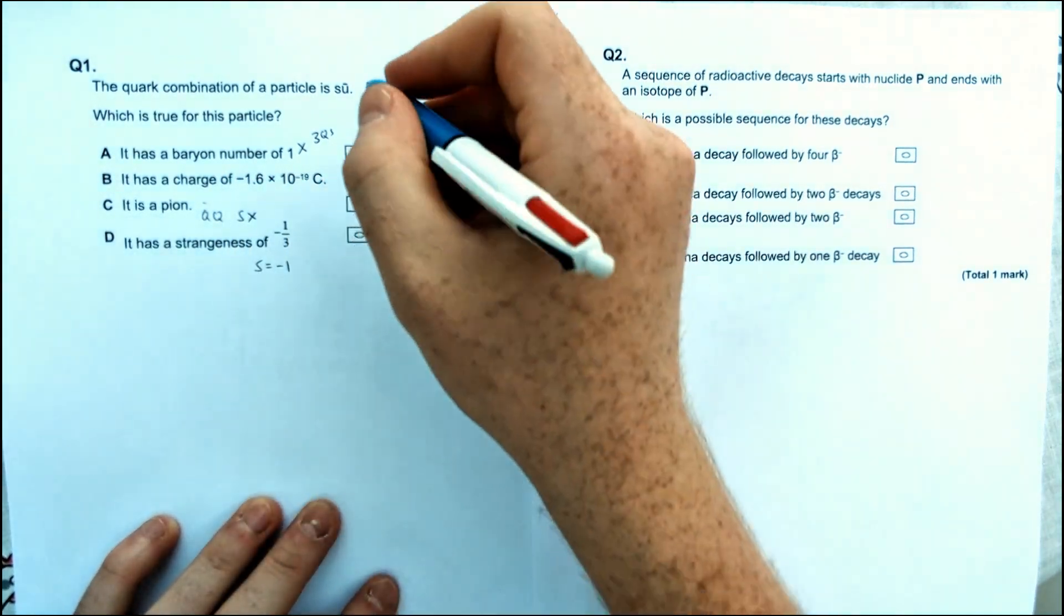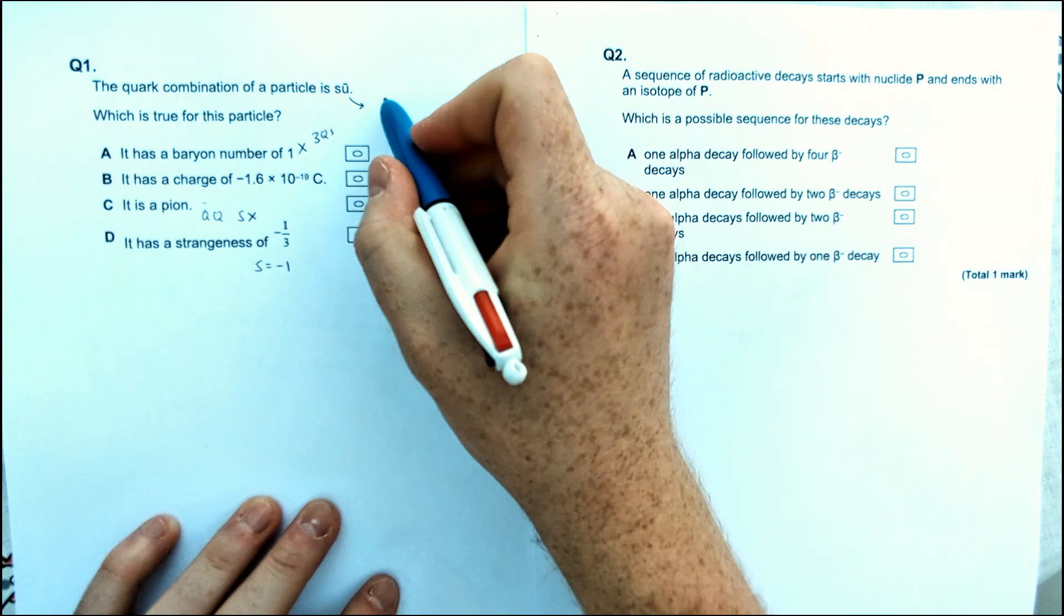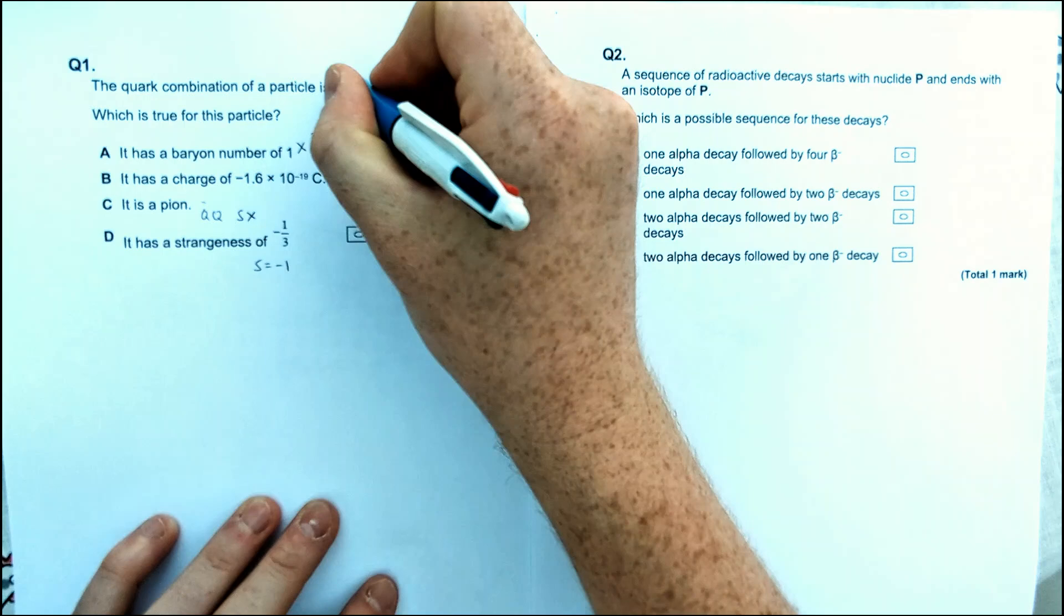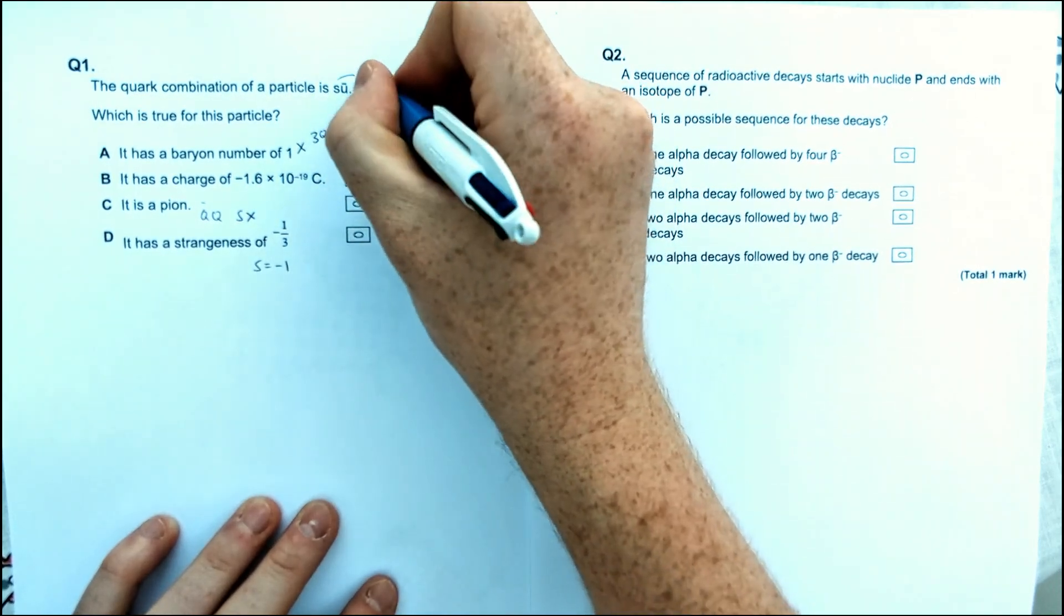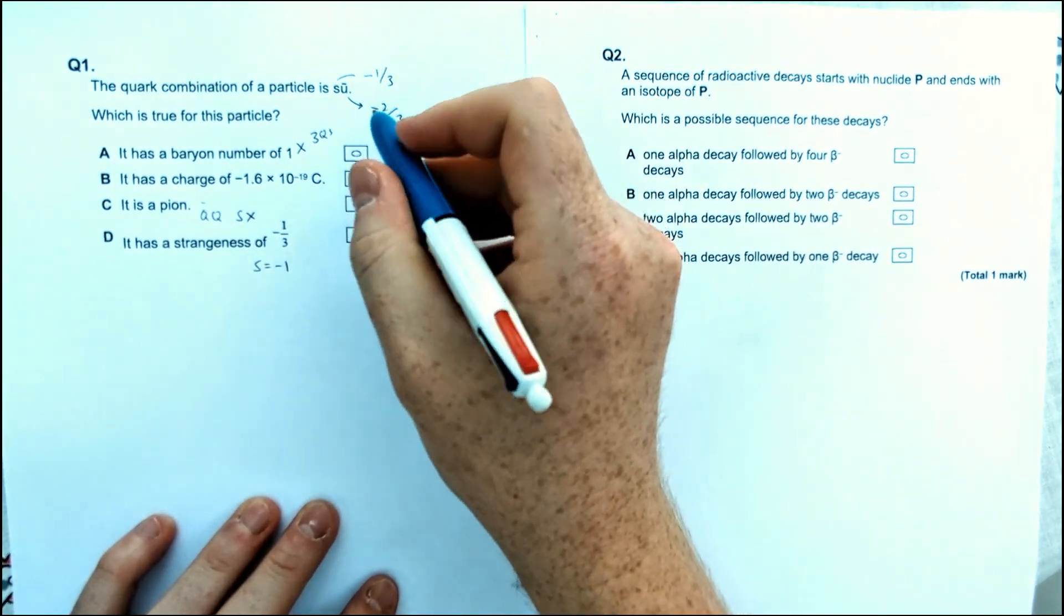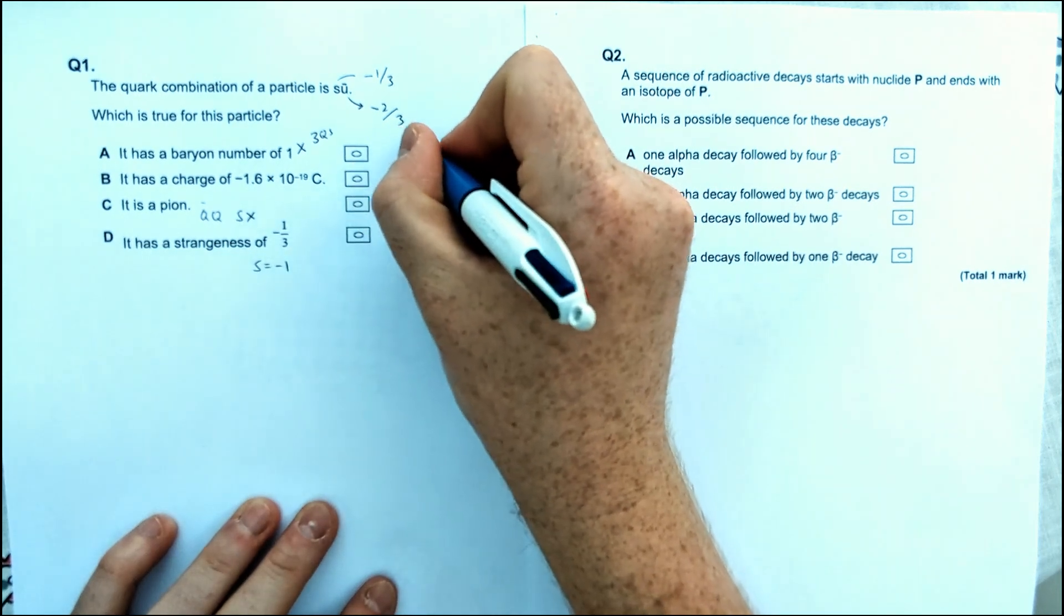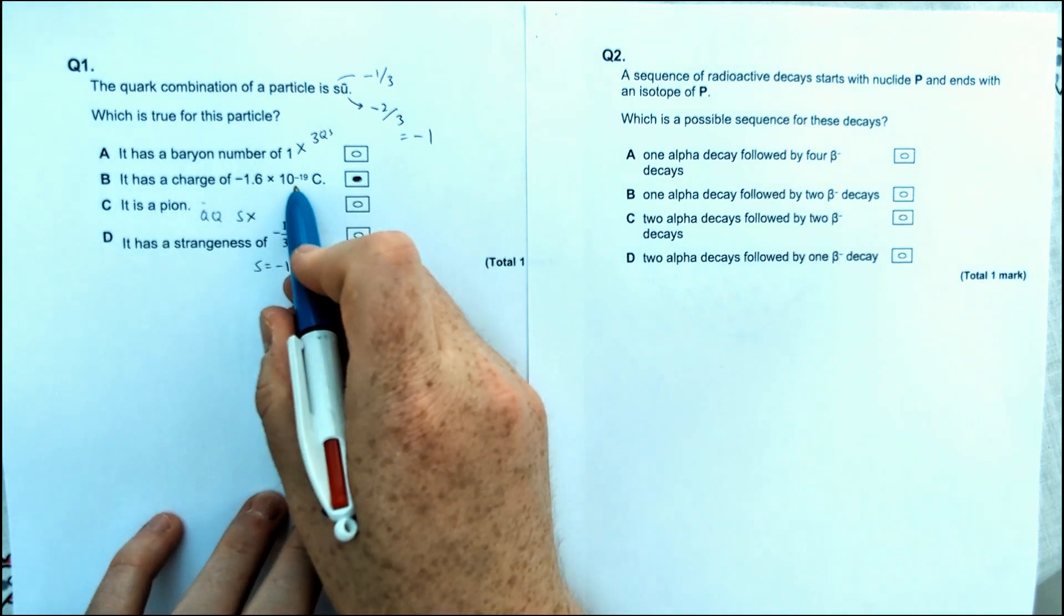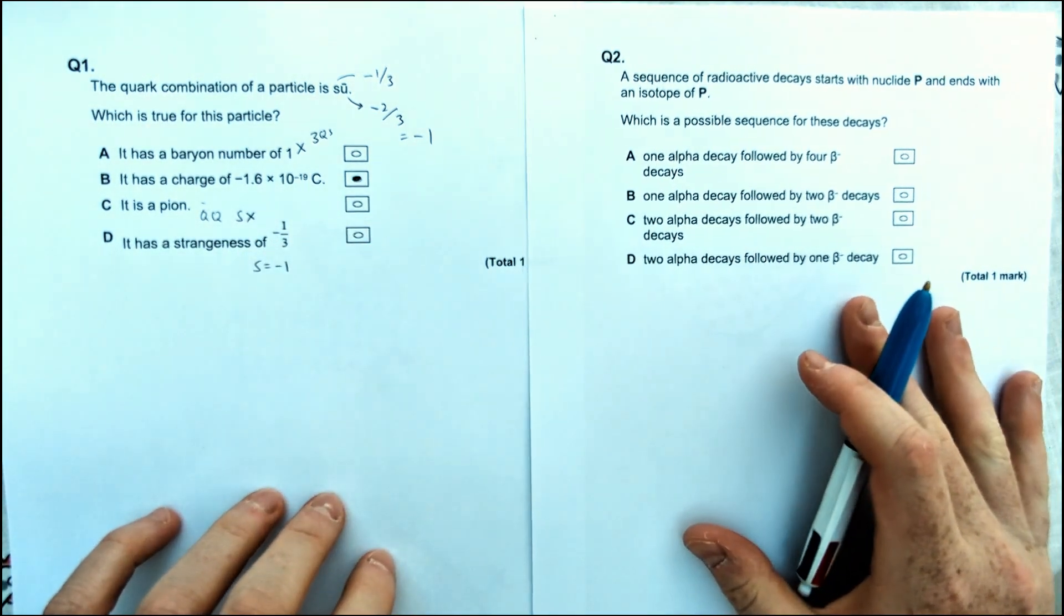So let's talk about this charge one then. An anti-up quark, an up quark on your equation sheet is plus 2 thirds. This is minus 2 thirds charge. And a strange is going to be minus 1 third as well. So minus 2 thirds minus 1 third gives you minus 1. And obviously that's the relative charge. The true value of the charge is therefore 1.6 times 10 to the minus 19 coulombs.